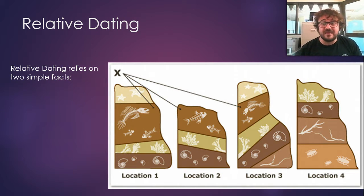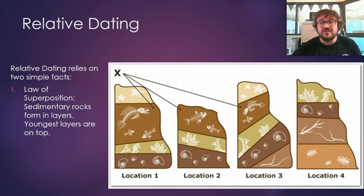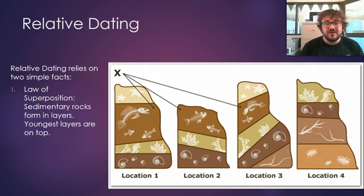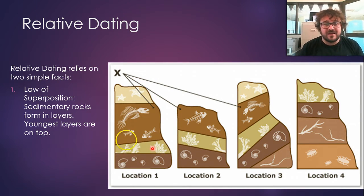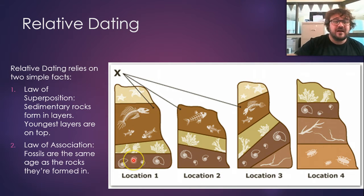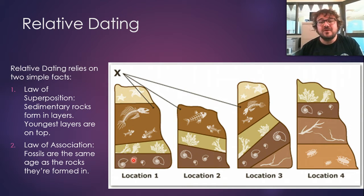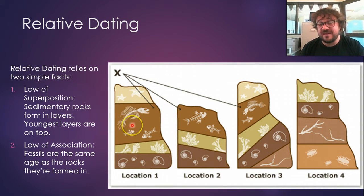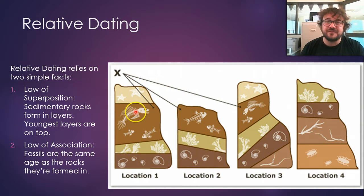Relative dating relies on two simple facts — two laws. First, the law of superposition, which means with sedimentary rocks they're formed in layers and the youngest layer is on top. So this layer is laid down, then this layer, then this layer, which means this layer is older than that layer, which is older than that layer, and this layer is the oldest. The law of association is that fossils are the same age as the rocks that they're formed in — we don't have 10-million-year-old rocks with 5,000-year-old fossils. If the rock is made there, the fossils are made at the same time.